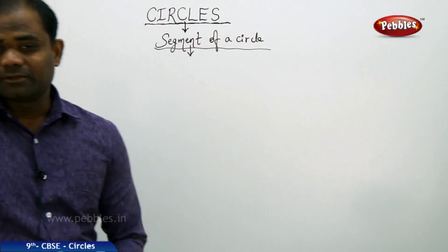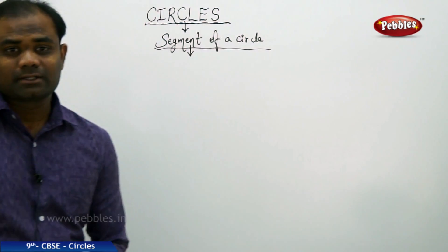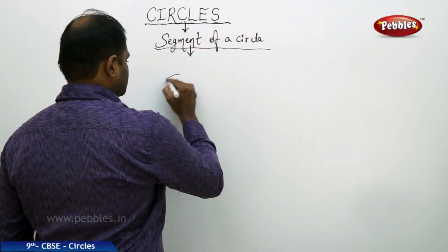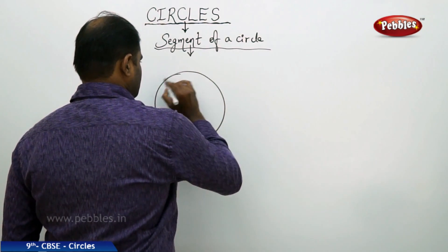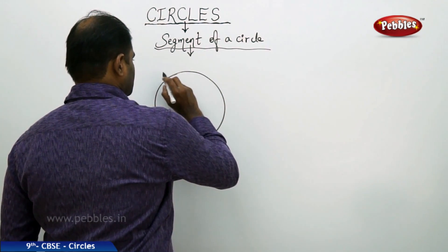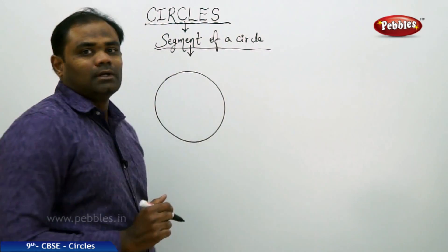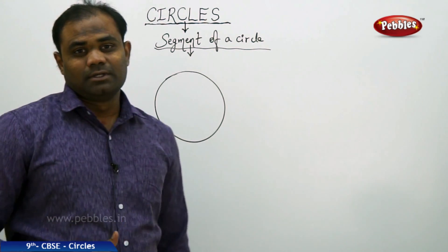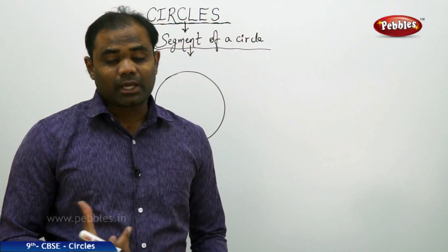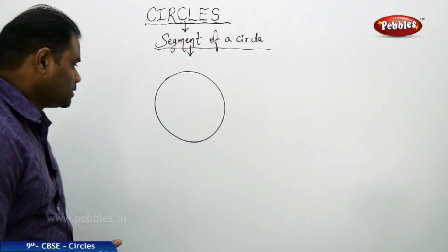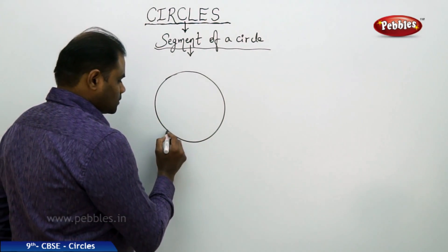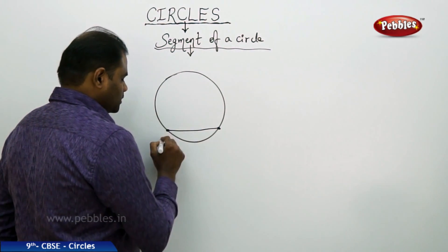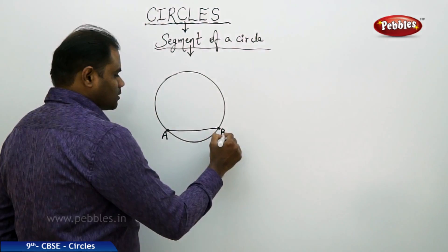In order to define a segment of a circle, let's take a circle of suitable radius and center. As we introduce the chord, we know that a chord is a line segment joining any two points of the circle. So AB is the chord for the circle.